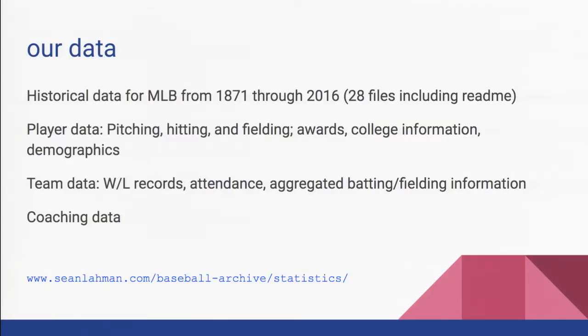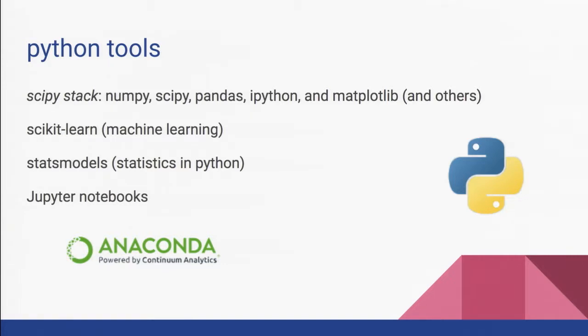Those of you who are a little older can remember things like Fireman of the Year, given in the late 70s, early 80s to relievers, and then also Gold Glove, things like that. Then team data, win-loss records, attendance, aggregated batting and fielding information, and then also coaching data. We're not really going to get into coaching data too much. I've explored it a little bit in my horrible effort to try and predict the most valuable player.